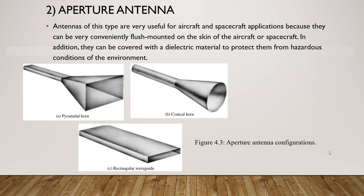Figure 4.3 shows aperture antenna configurations. Antennas of this type are very useful for aircraft and spacecraft applications because they can be conveniently flush mounted on the skin of the aircraft or spacecraft. In addition, they can be covered with dielectric material to protect them from hazardous conditions of the environment.